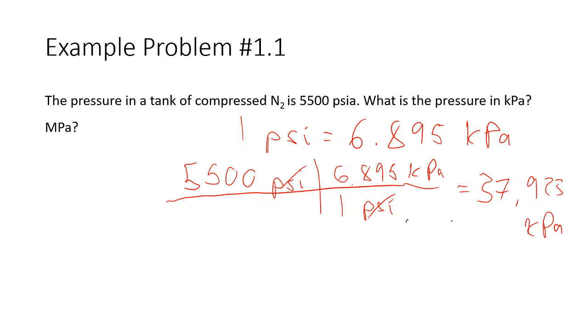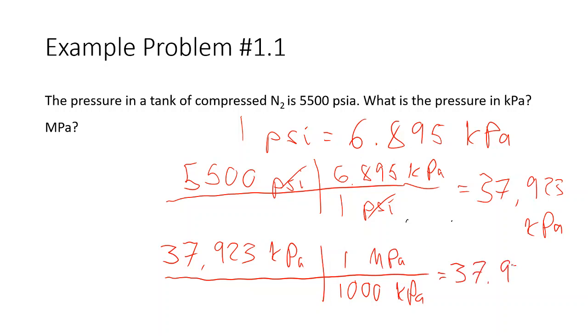So now if we want to convert to megapascals, we just do the same thing. So if we're starting now from 37,923 kPa, we make our chart here, and we know our unit conversion between kilopascals and megapascals. We have 1,000 kilopascals and 1 MPa. So then our answer in megapascals is going to be 37.923 megapascals.